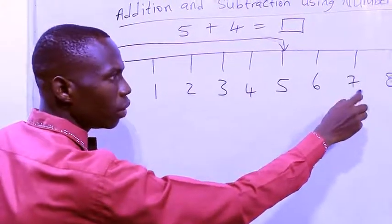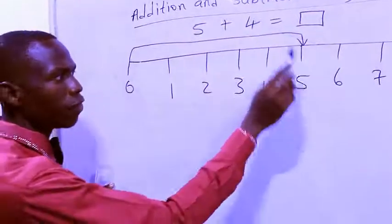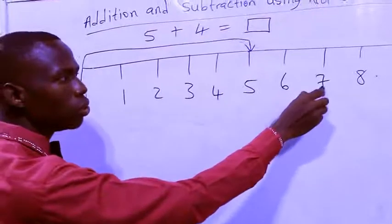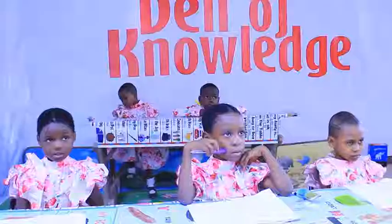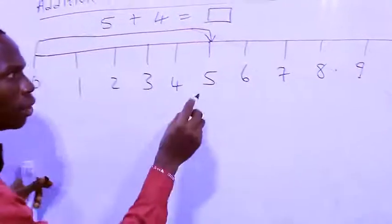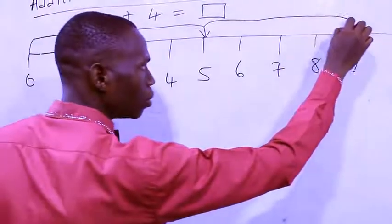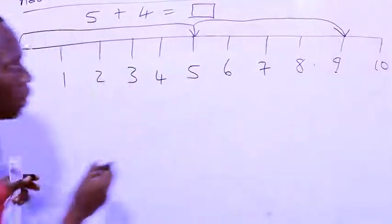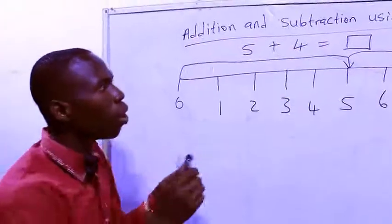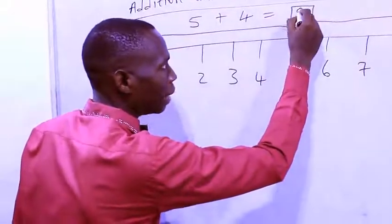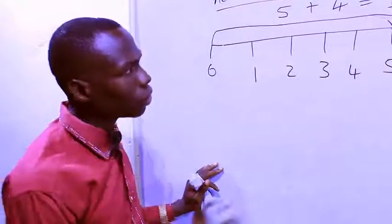From five, jump and move: one, two, three, four. That means if we add four to five, we get nine. You extend your line to reach that place and stop. That is to say, five plus four equals nine.